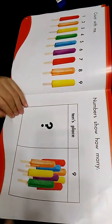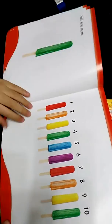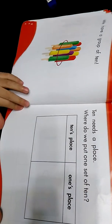Count with me. Numbers show how many. And one more. We have a group of 10.